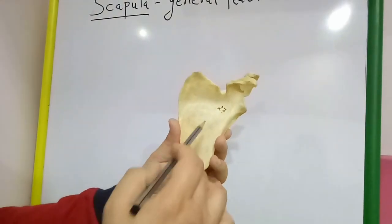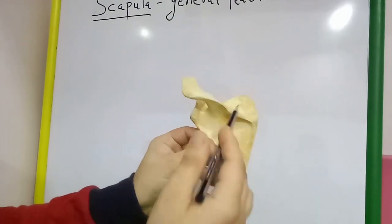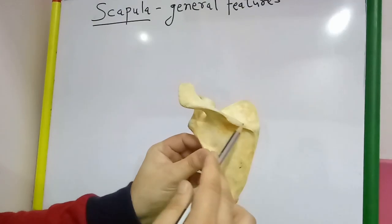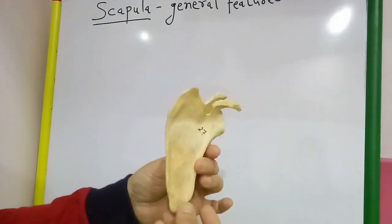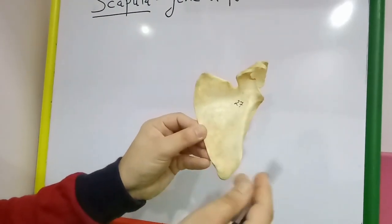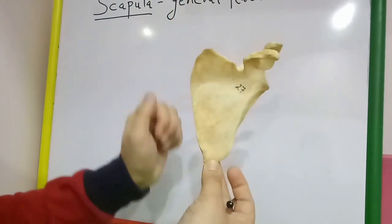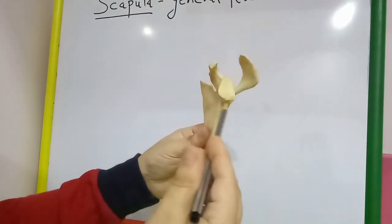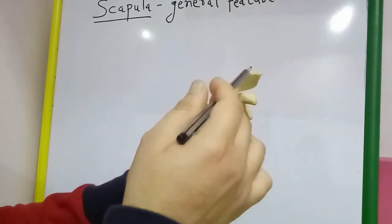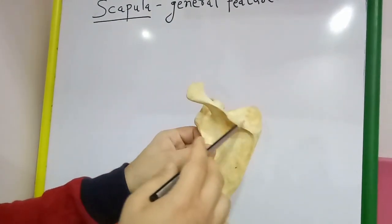The scapula has two surfaces: the anterior or costal surface, which is concave, and the posterior or dorsal surface, which is convex and has the attachment of the spine or spinous process. There are three borders — superior border, lateral border, and medial border — three angles — superior angle, inferior angle, and lateral angle — and three processes: coracoid process, acromion process, and the spinous process or spine.